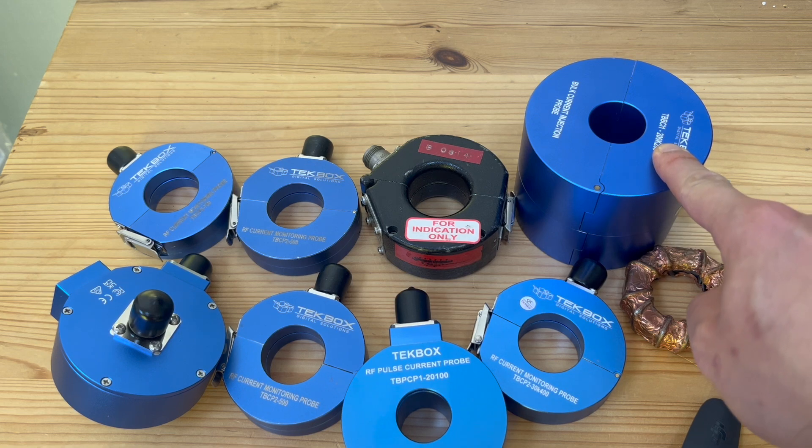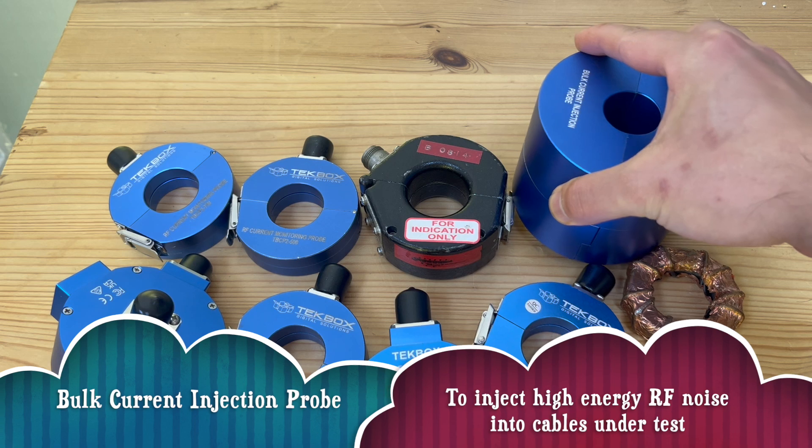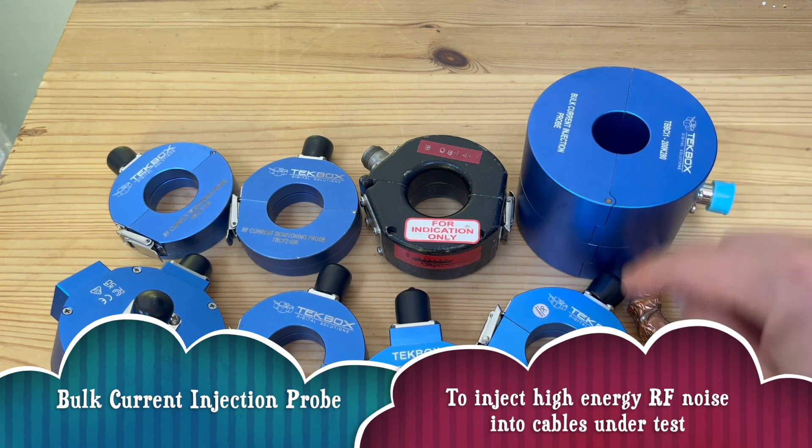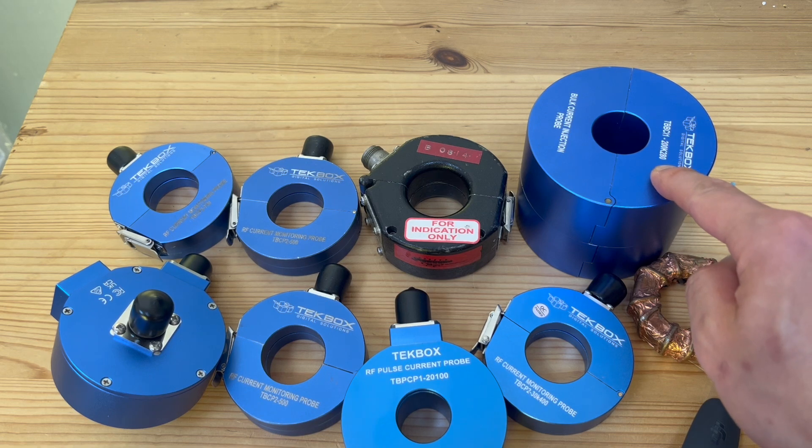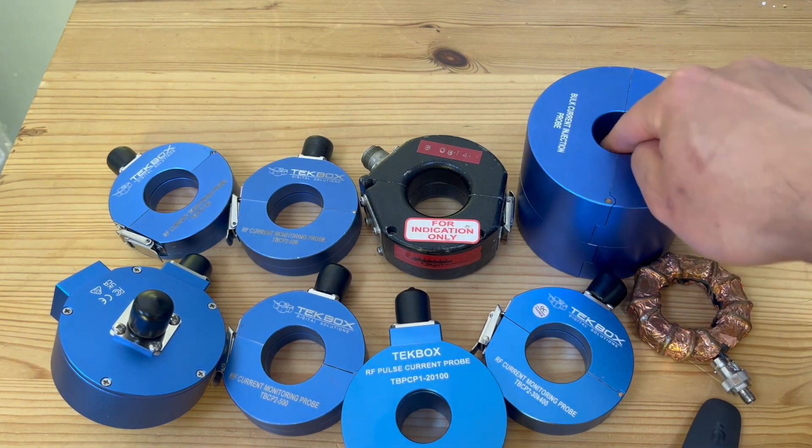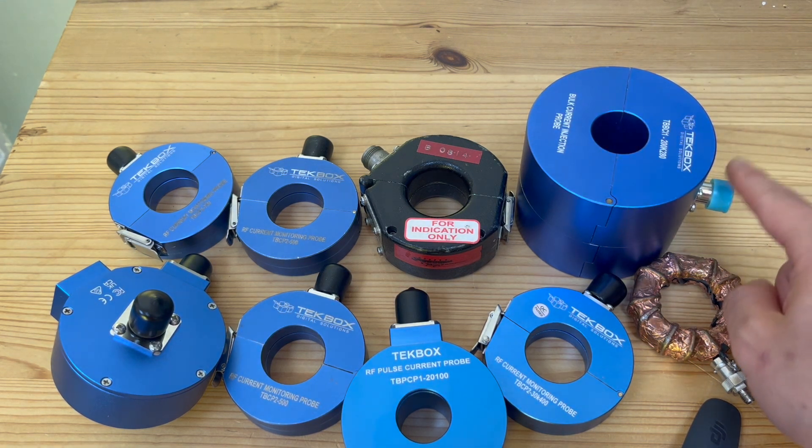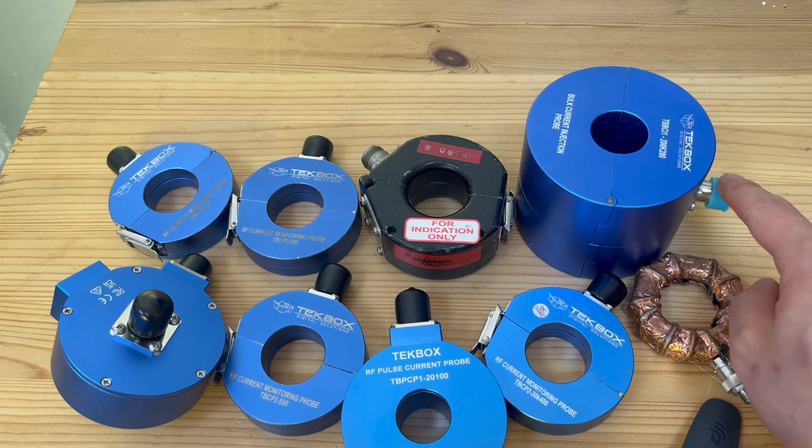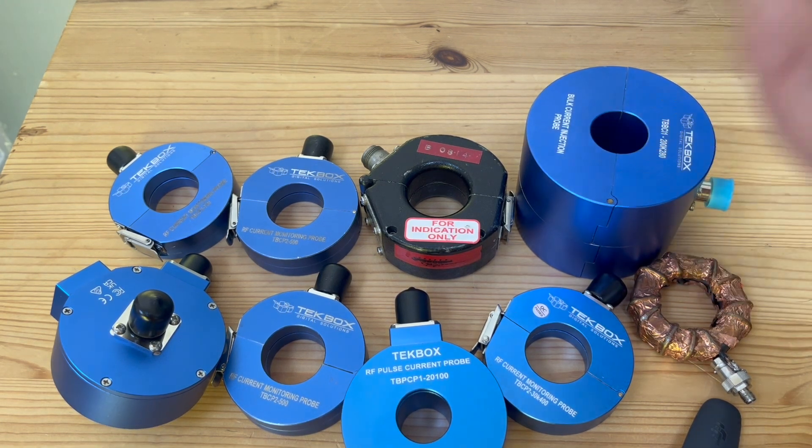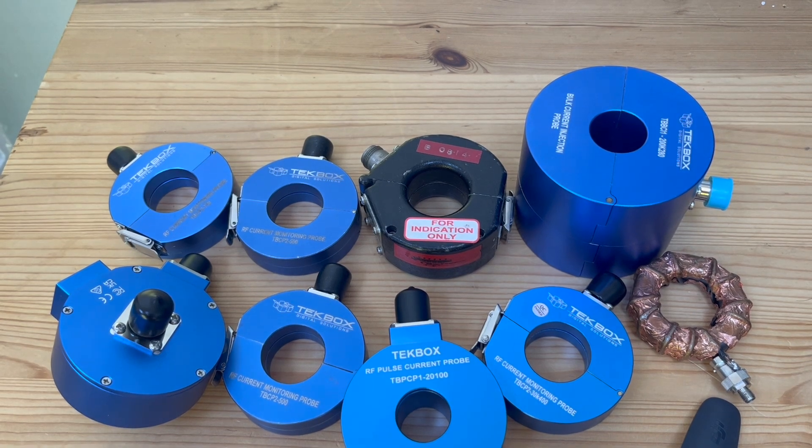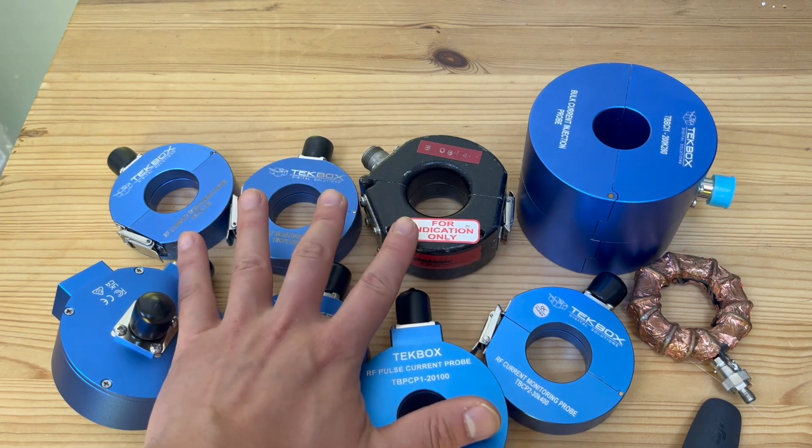This is what we call a bulk current injection probe. It is very heavy and big because they can handle a lot more power. This probe is used for injecting noise. You put the cable under test through this hole, and then you inject high energy RF energy to this port. Therefore, you induce current in the cable bundle you test. That's for injecting noise, and these are all used for picking up noise.